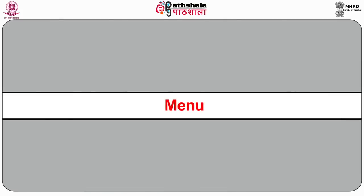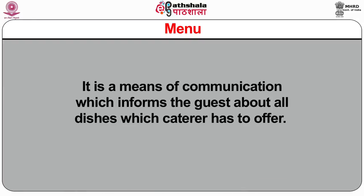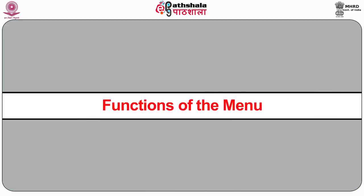A menu is simply defined as a specific order of dishes which are prepared to be served to a guest at a given meal. It is a means of communication which informs the guest about all the dishes the caterer has to offer. Menu compiling and planning is one of the most important tasks whether it is related to profit-making for hotels or restaurants, or for budget operations such as hospitals and schools.